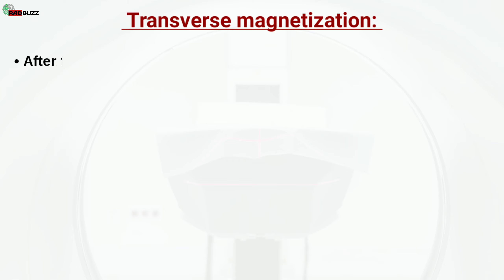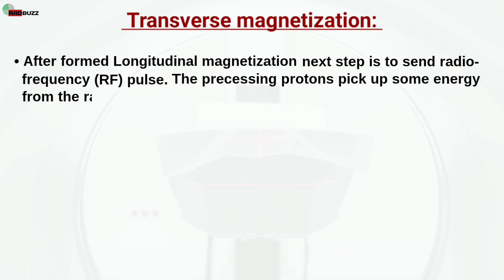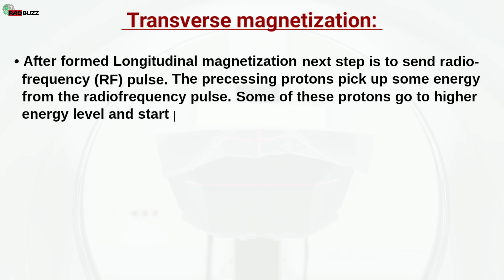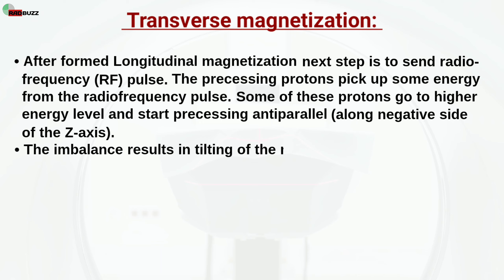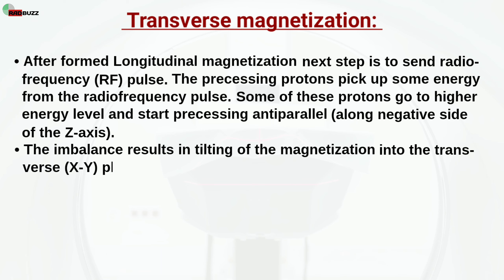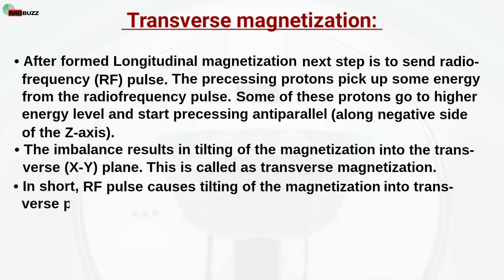Transverse magnetization: After longitudinal magnetization is formed, the next step is to send a radio frequency RF pulse. The precessing protons pick up some energy from the radio frequency pulse. Some of these protons go to a higher energy level and start precessing anti-parallel along the negative side of the z-axis. This imbalance results in tilting of the magnetization into the transverse XY plane. This is called transverse magnetization. In short, the RF pulse causes tilting of the magnetization into the transverse plane.